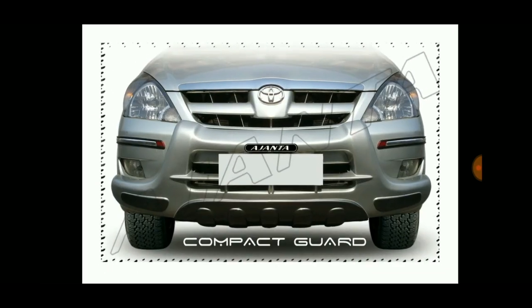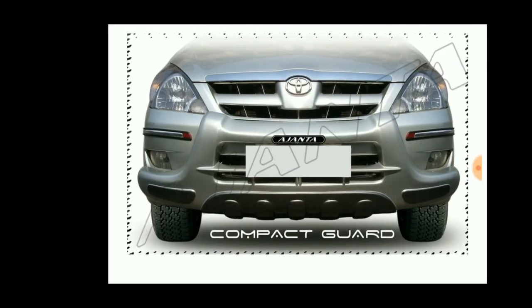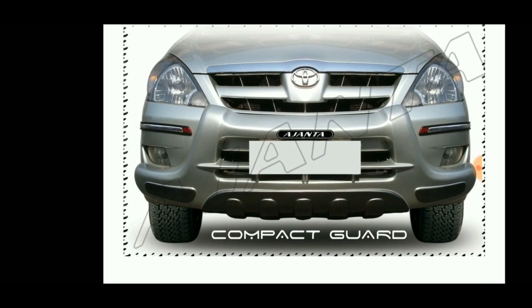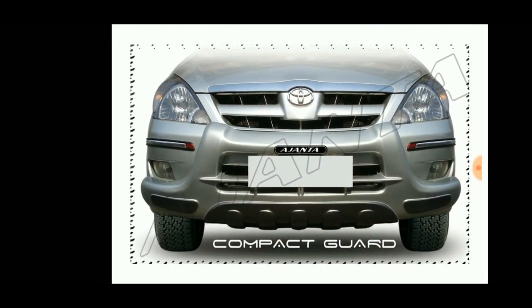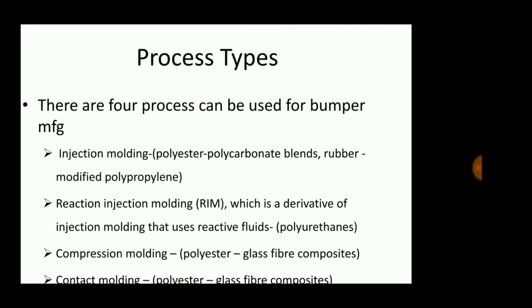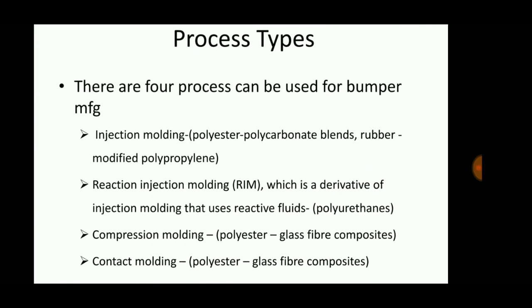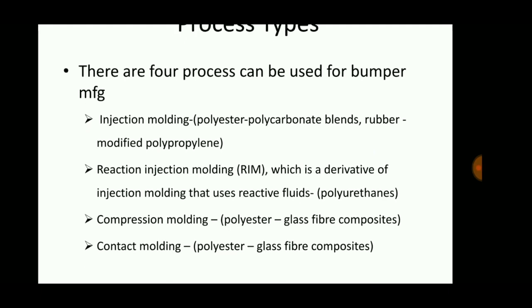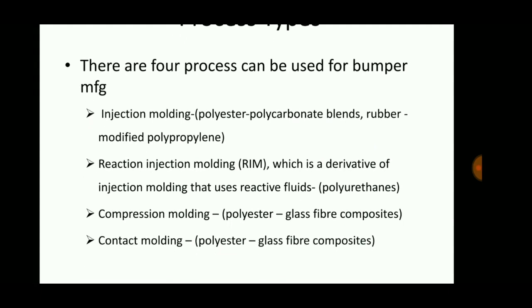This is one kind of bumper, and this is the compact guard. There are generally four process types used for bumper manufacturing.